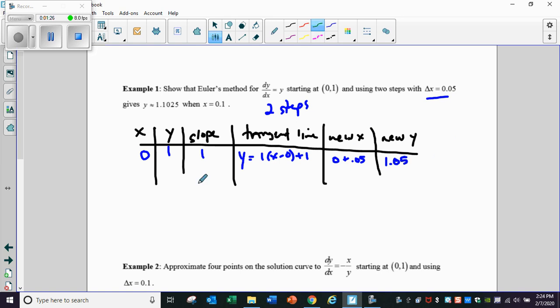This point now moves down here to our second row, so 0.05, 1.05. This is our second step that we're working on, and I said we needed two steps. The slope is equal to the y value, so the slope is 1.05. The tangent line that goes with this point is 1.05 times (x minus 0.05) plus 1.05. My new x is my last x of 0.05 plus another 0.05, which is 0.1.